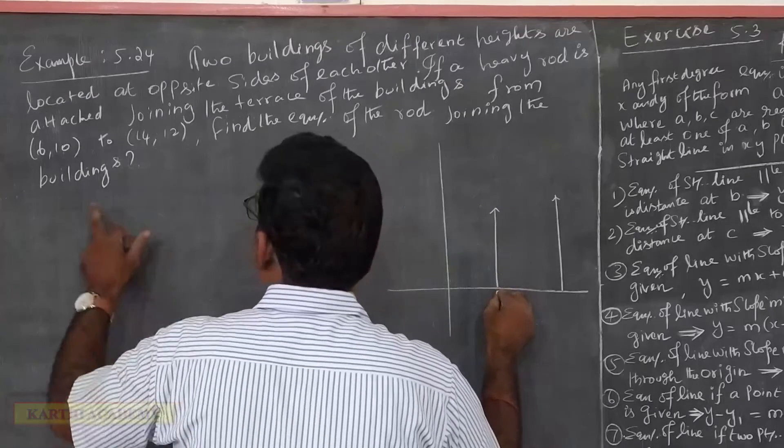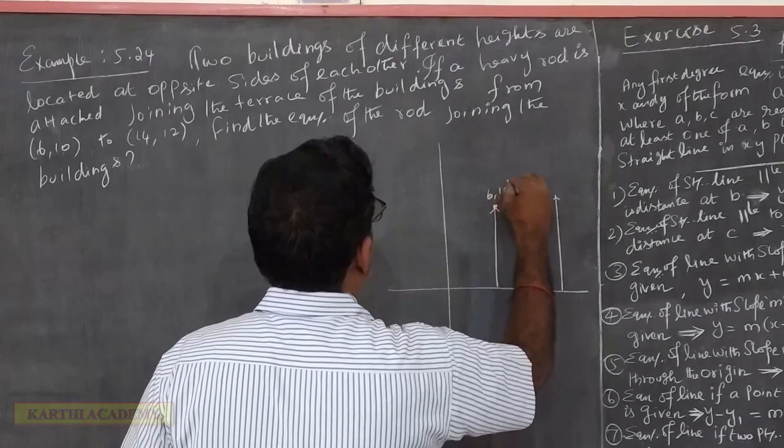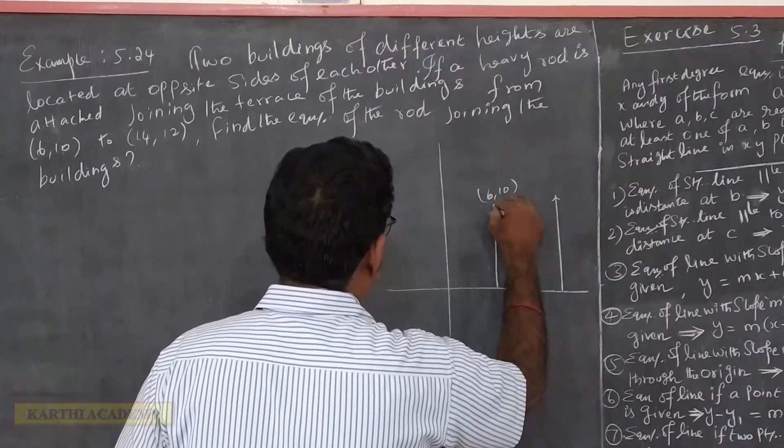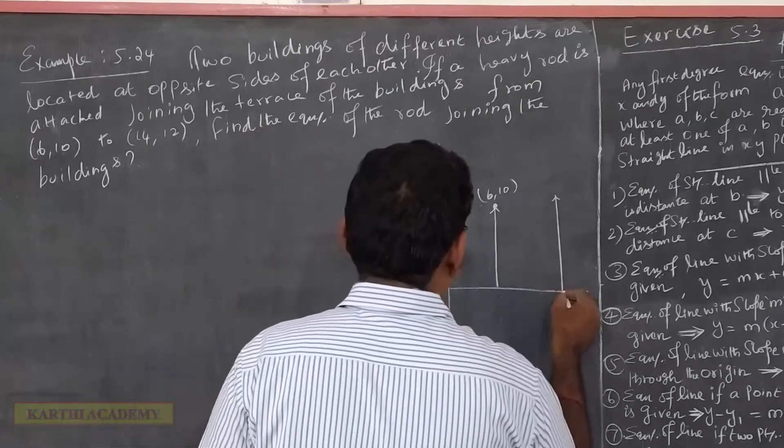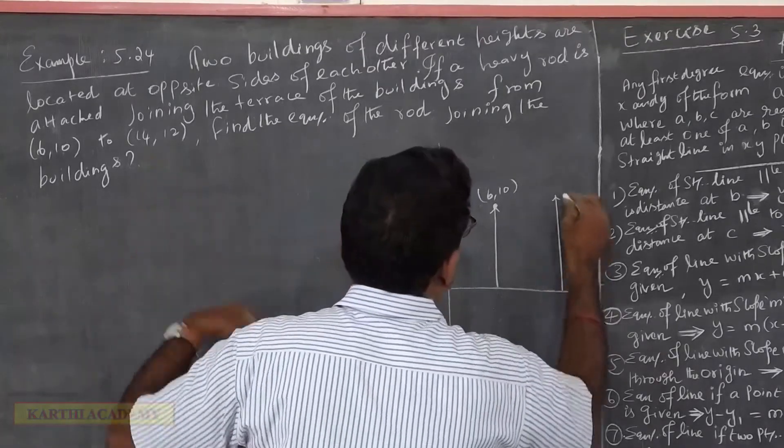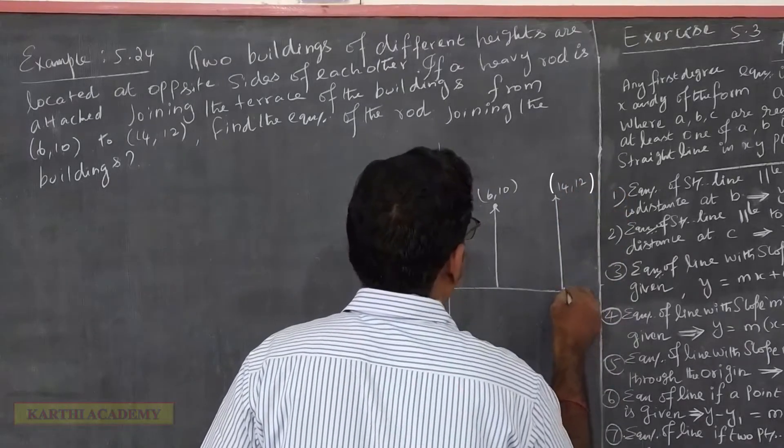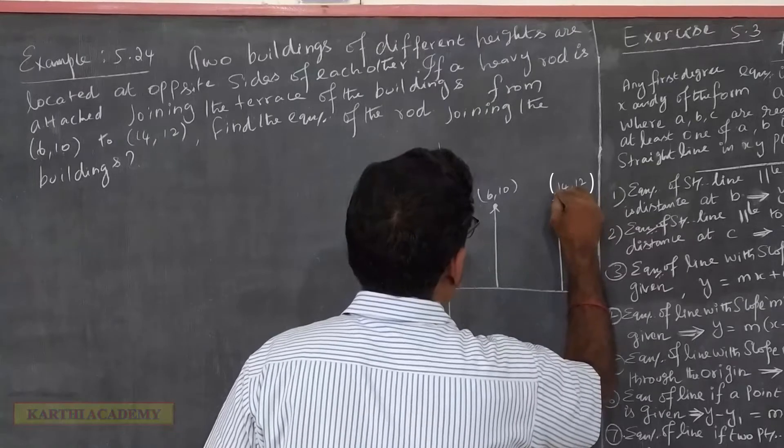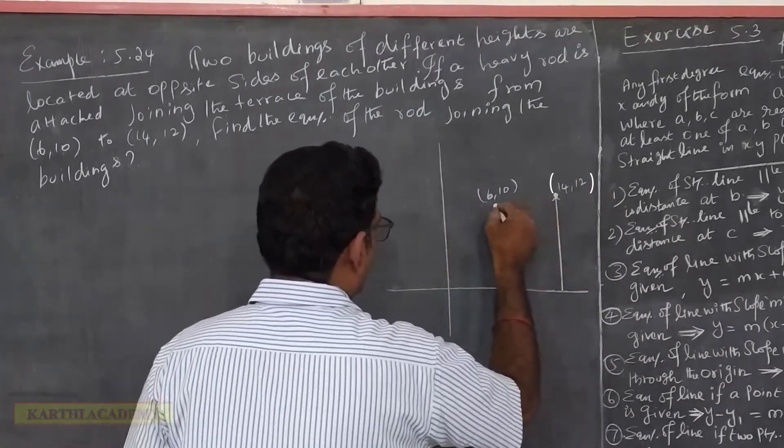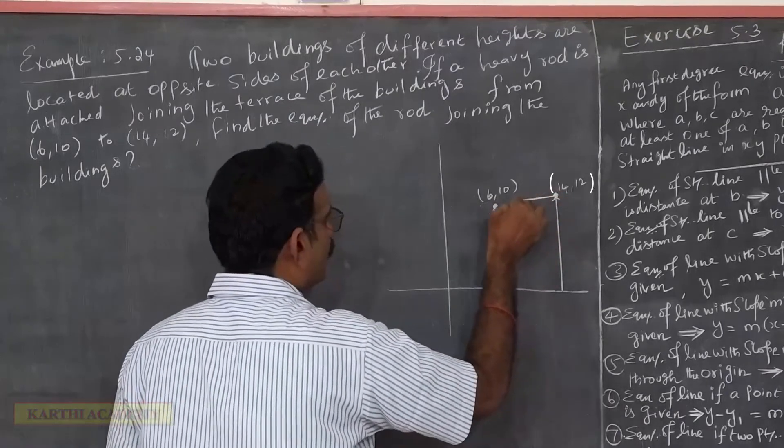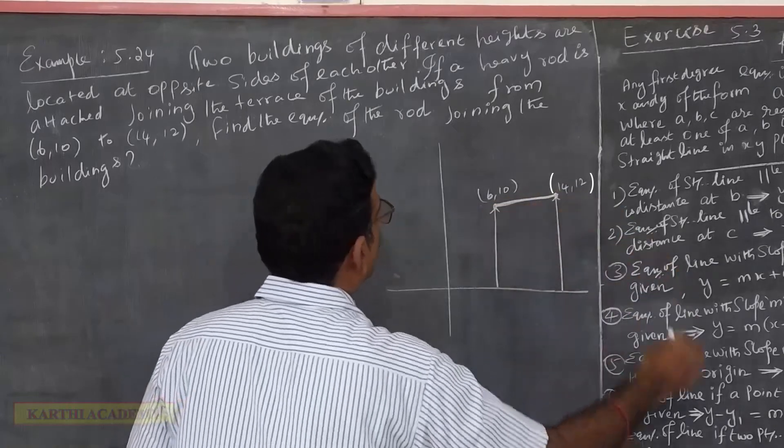The x-axis is 6, y-axis is 10. In the first building at point (6,10), and in the second building it is (14,12). If you join the two points, it will represent the rod.